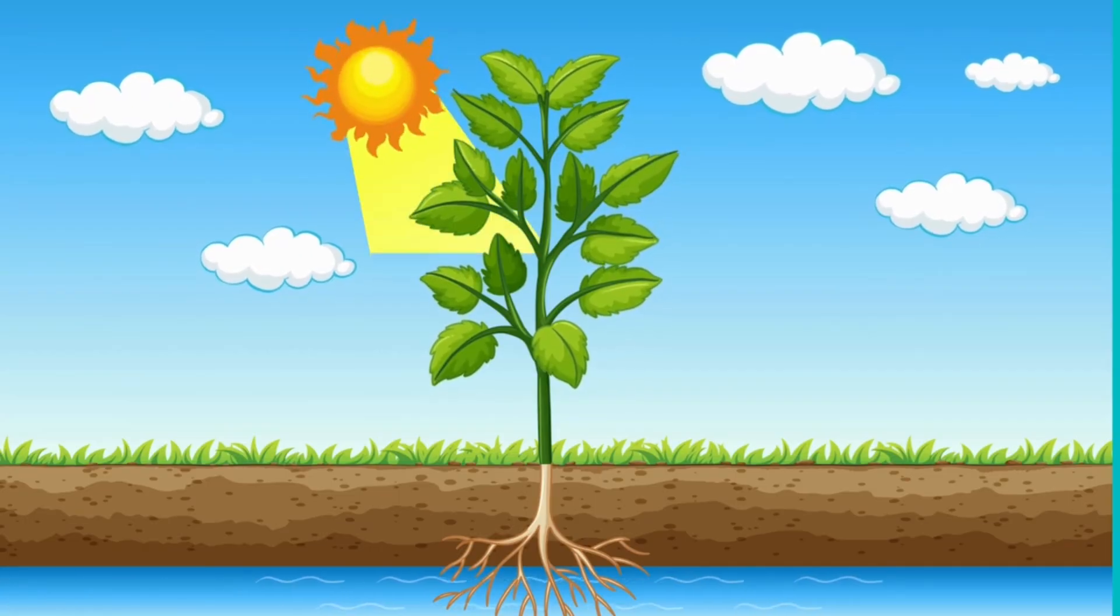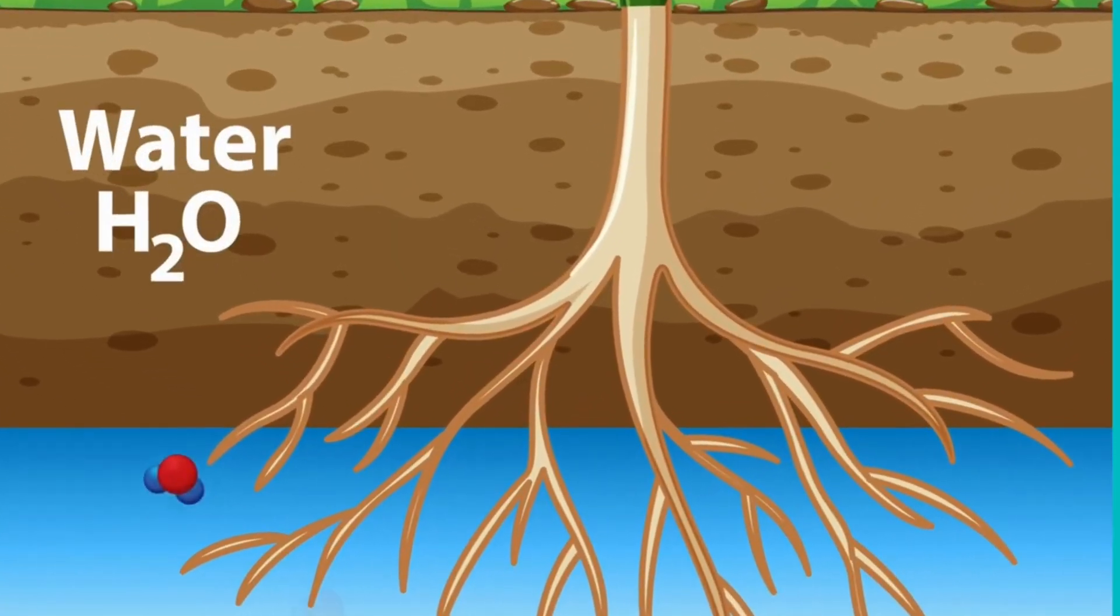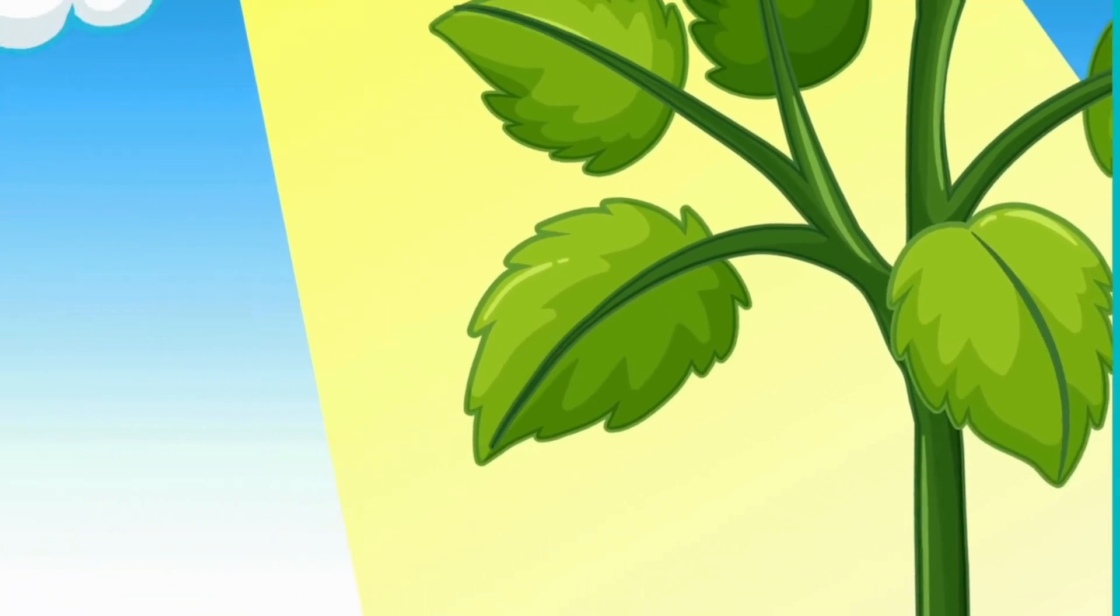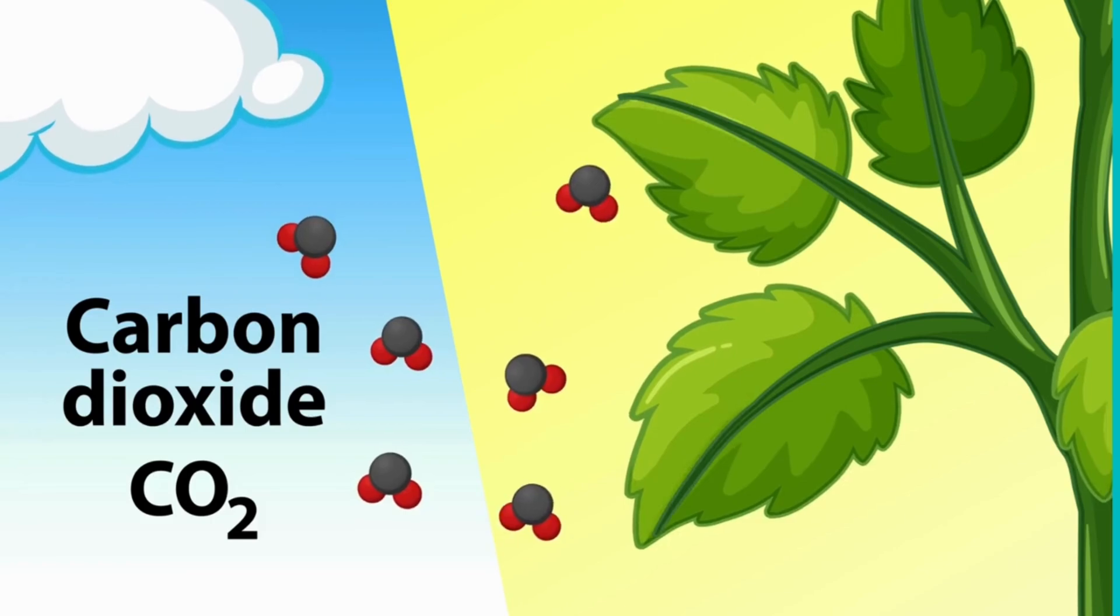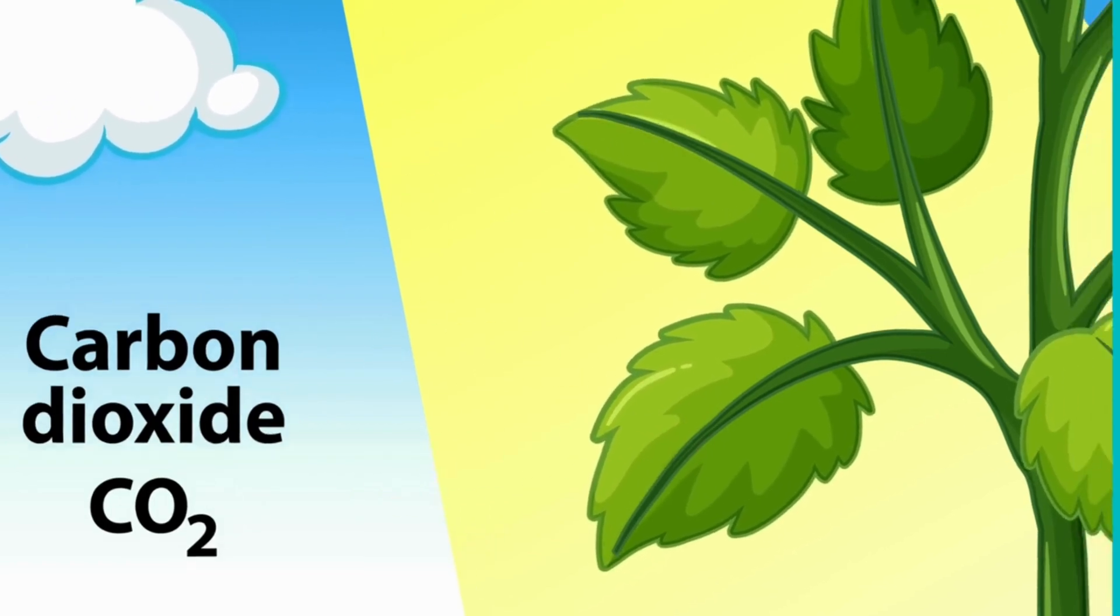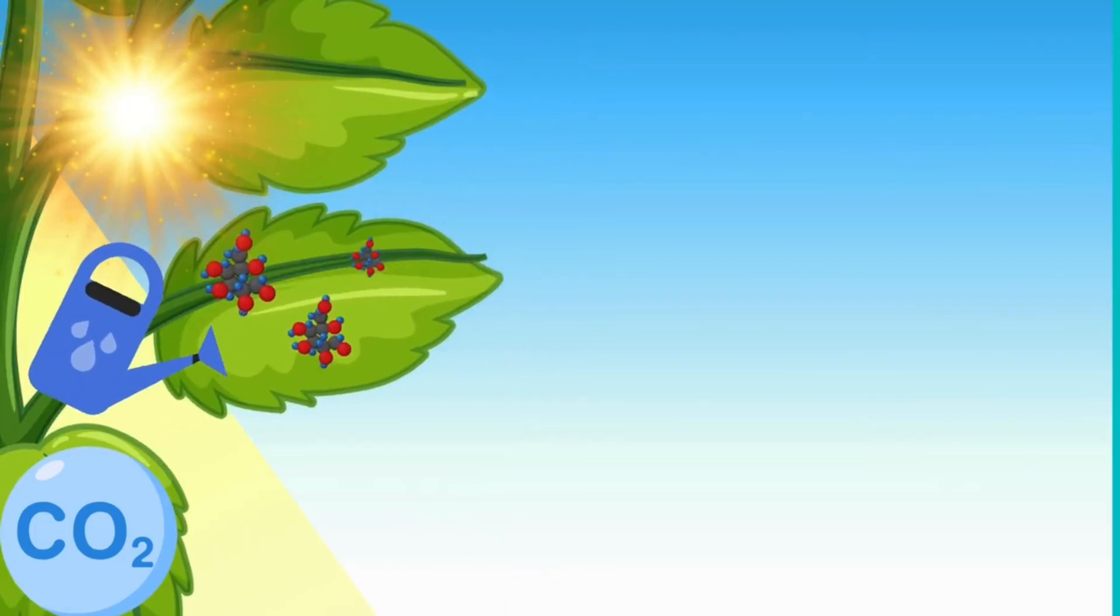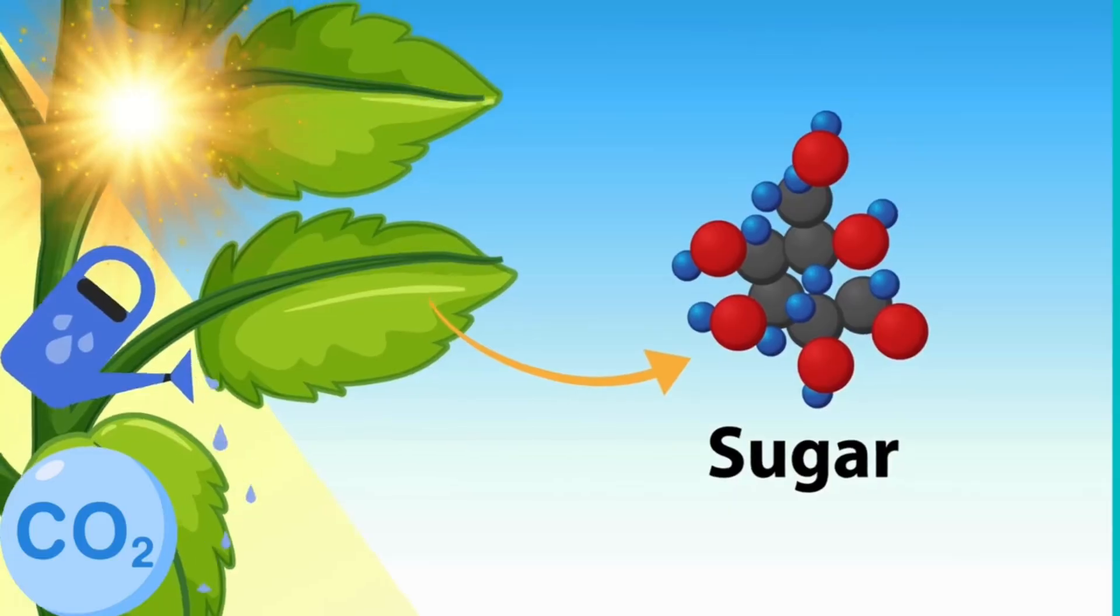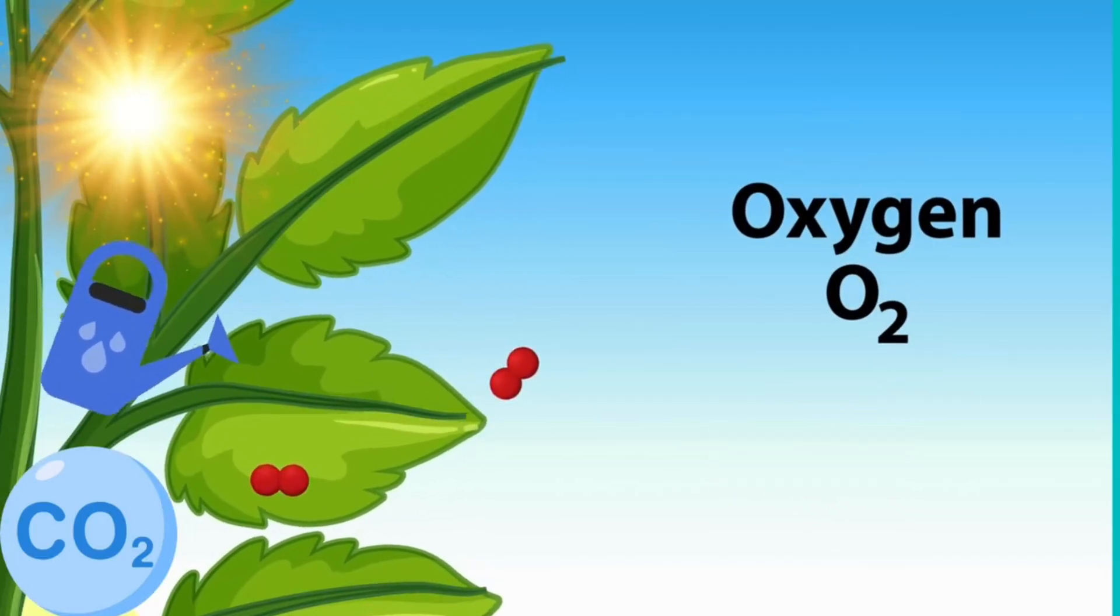Let's connect the ideas together. Sunlight is trapped in the leaf. Roots absorb water from the soil. Leaves take in carbon dioxide from the air. Then sunlight, water and carbon dioxide mix together inside the leaf. The plant makes sugar called glucose which is its food. At the same time, oxygen is released into the air. This whole process is called photosynthesis.